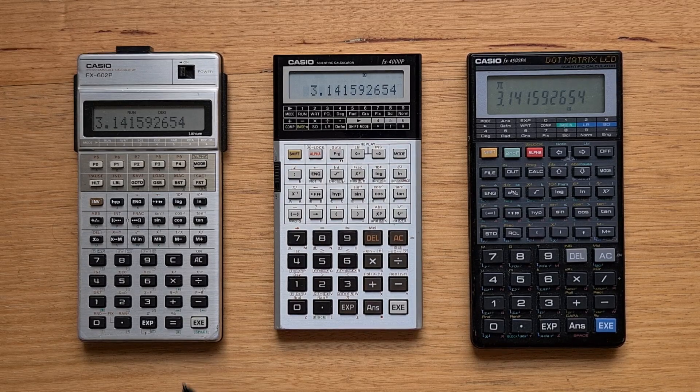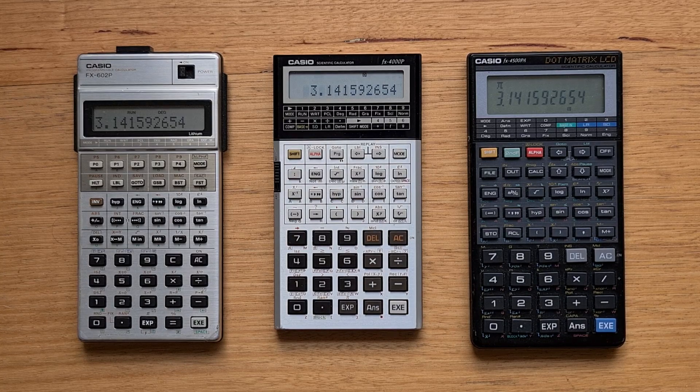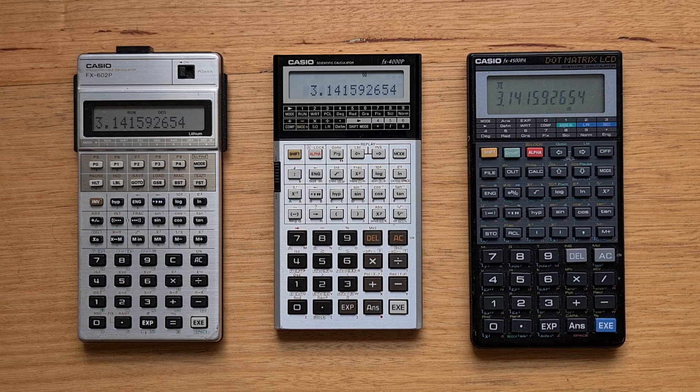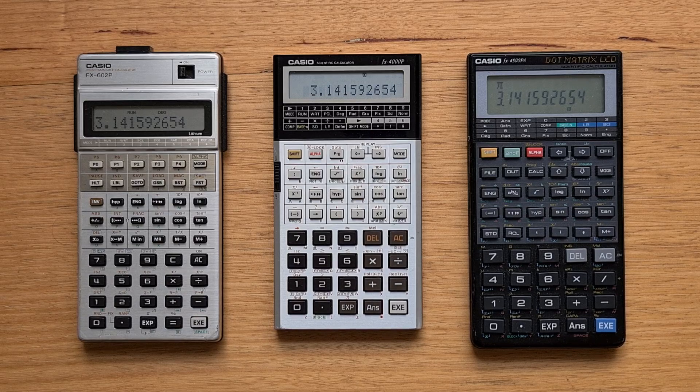Casio produced a number of great programmable scientific calculators over the 80s. There was the FX602P from 1981, a competitor to the HP41C, and the elegant and powerful FX4000P from the mid 80s, both of which I had separate videos on.